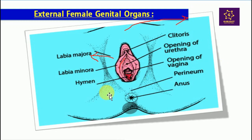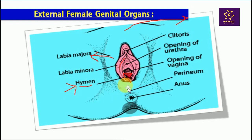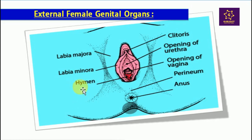Then comes the hymen — a layer membrane. A common belief is that if there is no bleeding during first sexual intercourse, the hymen has not broken, implying the girl wasn't a virgin. But this is totally wrong. The hymen membrane can be broken by hard exercise, heavy workouts like gym, cycling, swimming, or even an accident. So it is a misconception that an intact hymen or no bleeding during first intercourse means a girl wasn't a virgin.